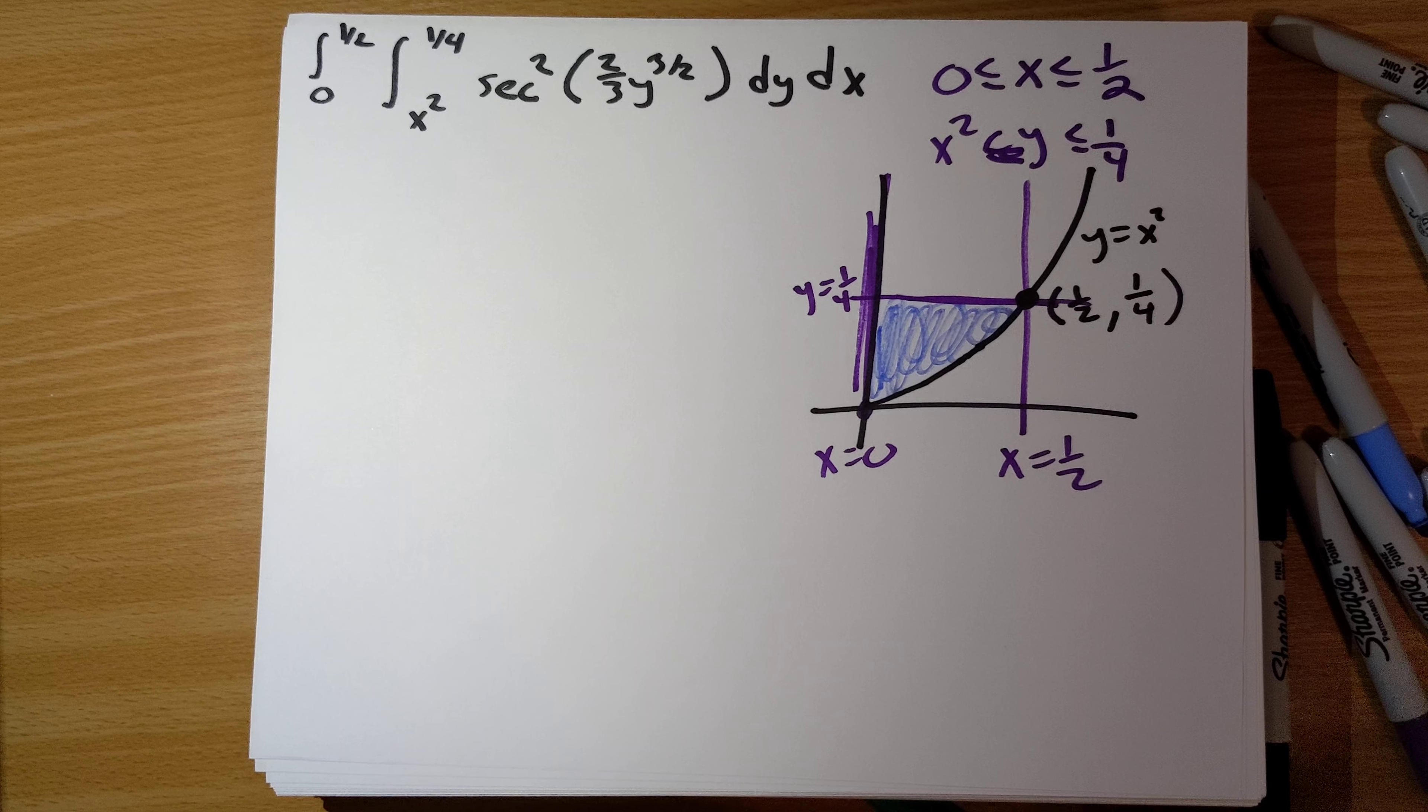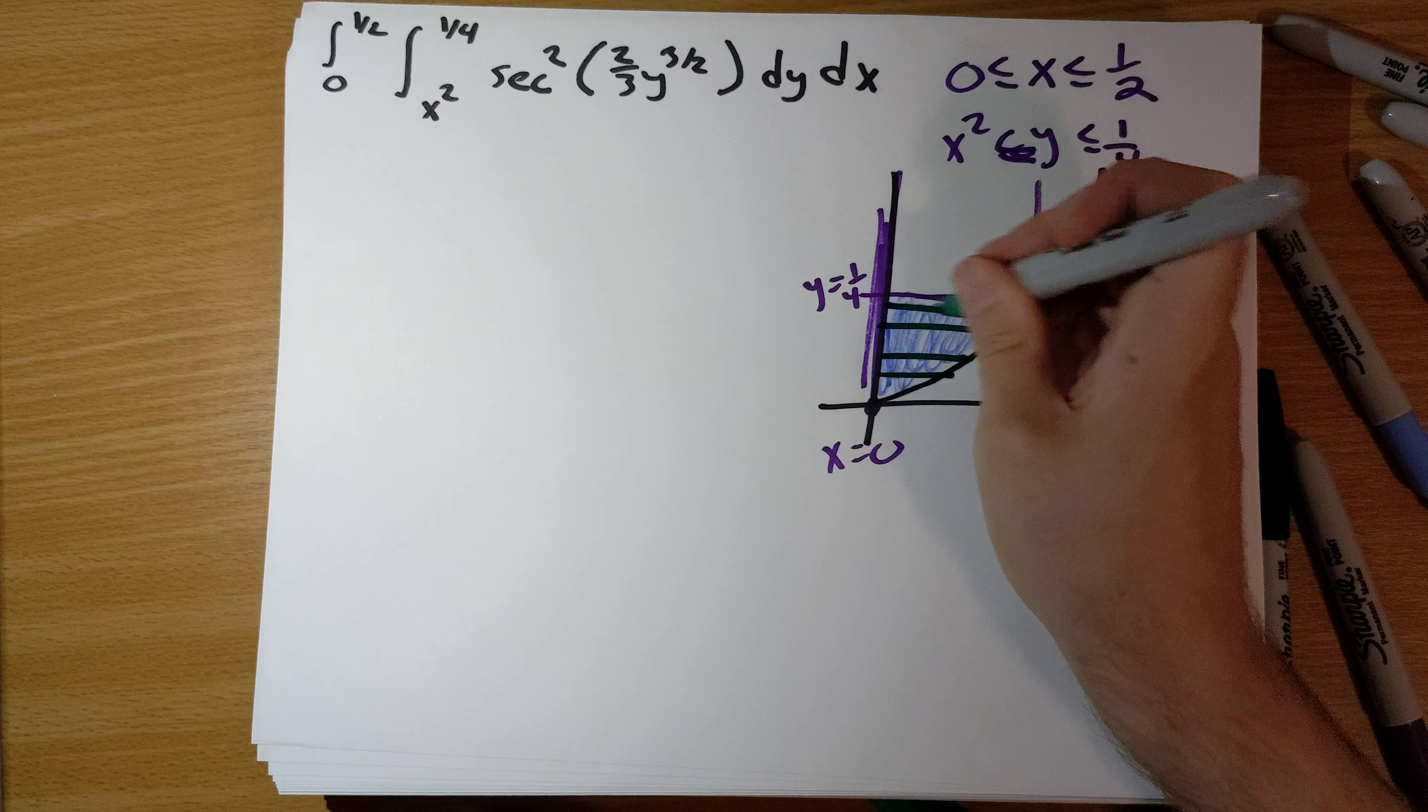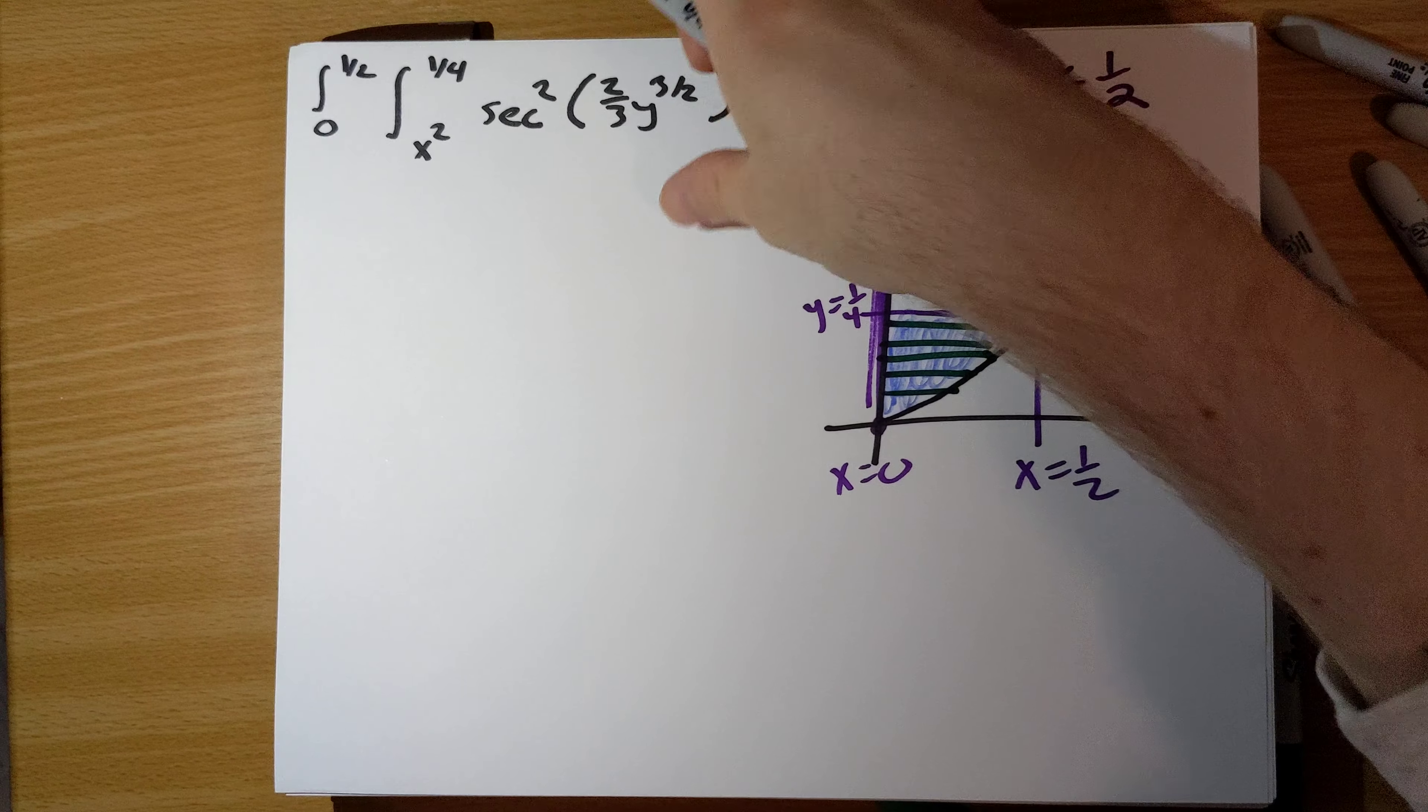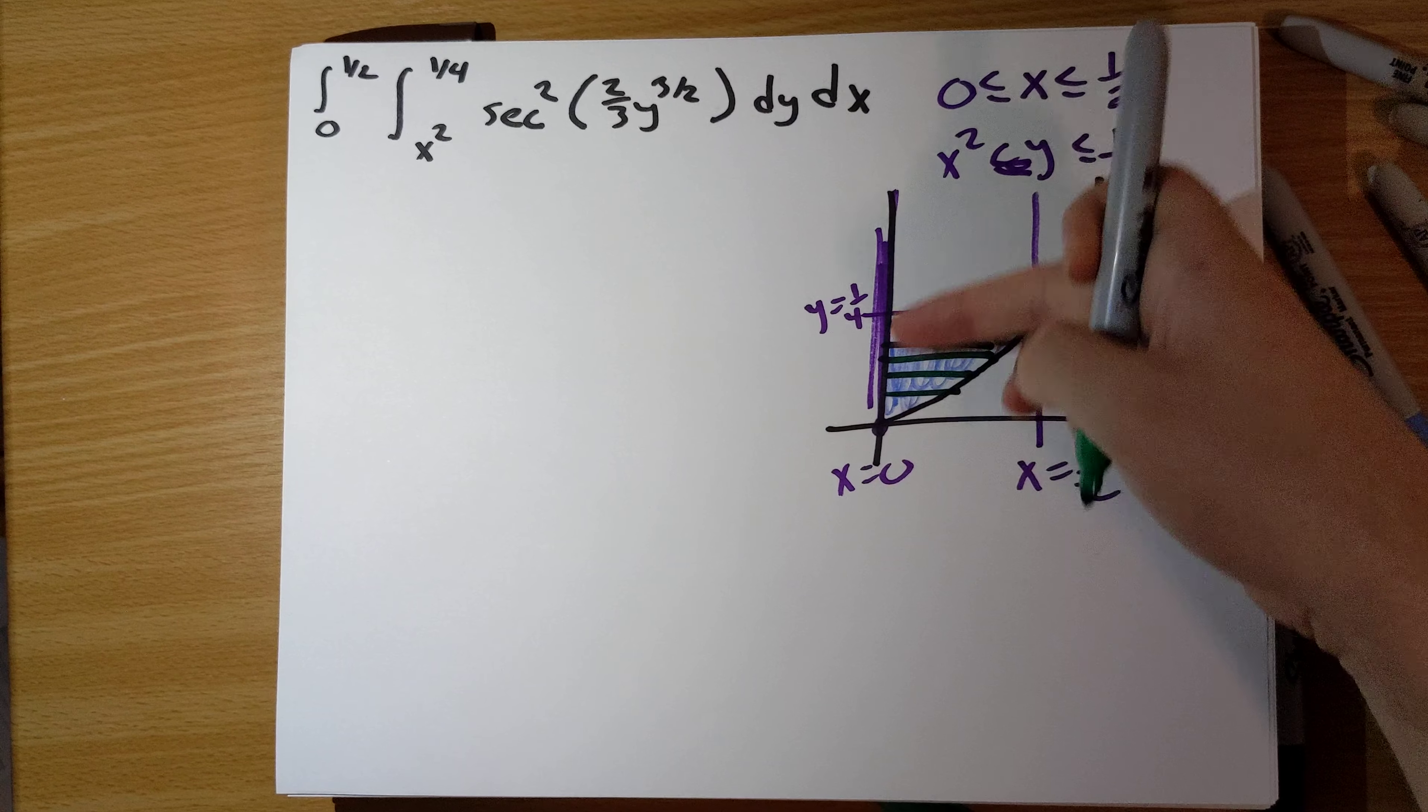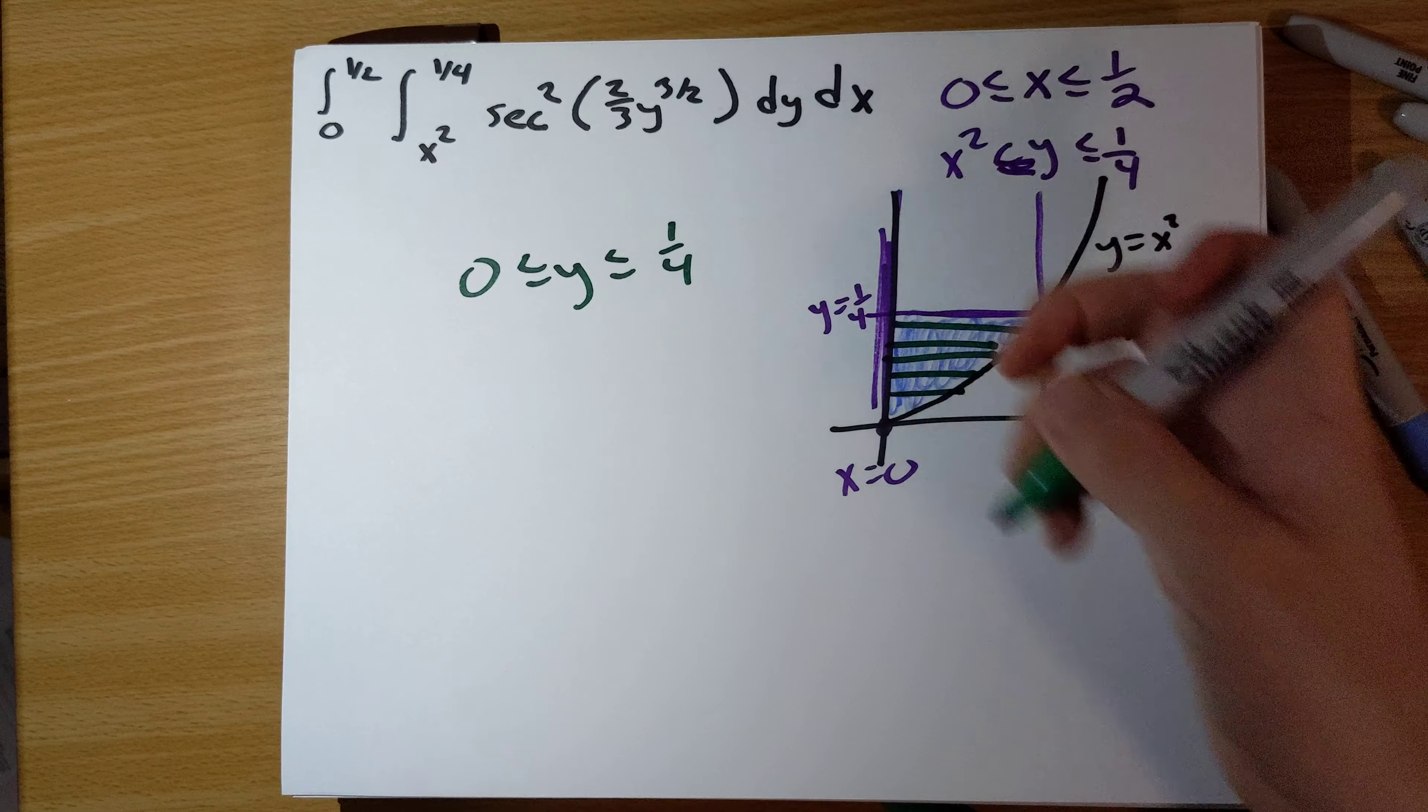So instead of slicing this vertically, we want to slice this horizontally like so. What are the new bounds here? y is running from 0 to 1/4.